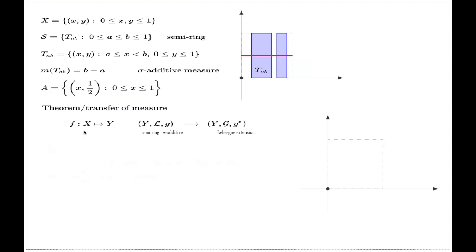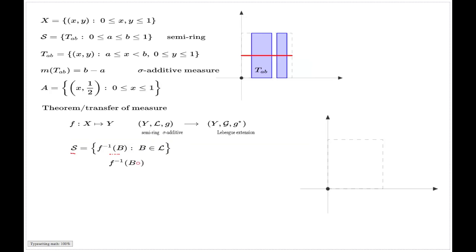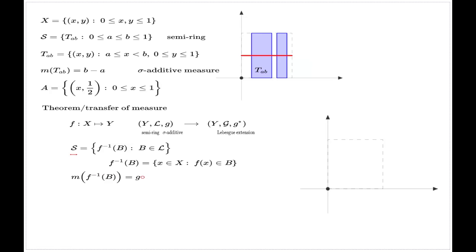The transfer is done as follows. On X we introduce a family of subsets S, which will be a semi-ring, consisting of all pre-images of elements of the semi-ring L. The pre-image of a set B is the collection of all x in the universal set X such that f(x) belongs to B. So S is the collection of pre-images of elements of L, and we define the measure of each pre-image in S to equal the measure of B in Y. This example gives a very nice demonstration of this general concept of transfer of measure.